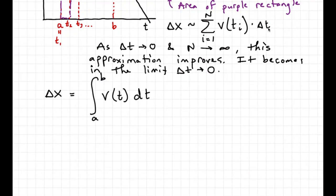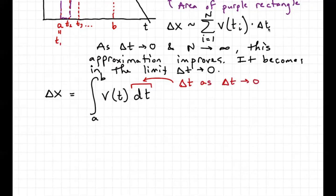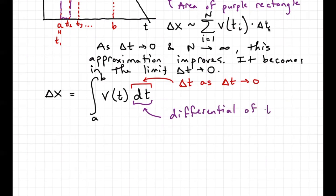The dt now represents delta T as delta T goes to zero — it's an infinitesimally small amount of time. dt is one thing; d and t are not separate. dt is a single infinitesimally small number called the differential of t, and it's equivalent to delta T in the Riemann sum. It tells us that we're moving along time — that time is changing — as we do this operation.